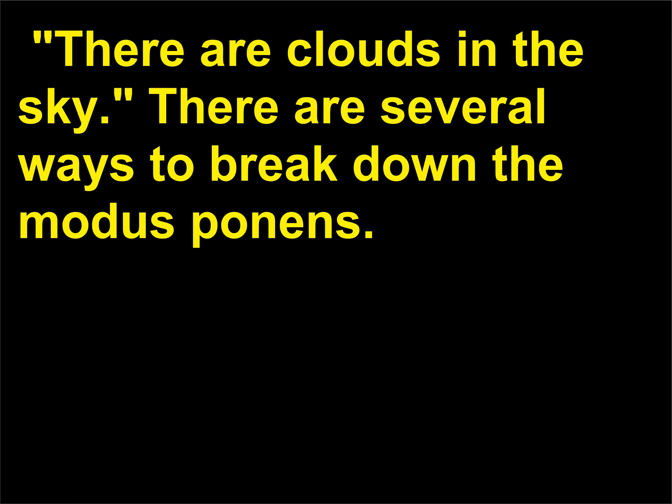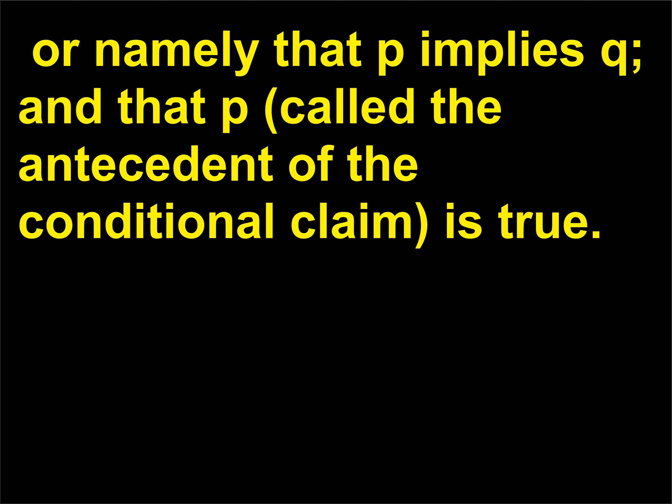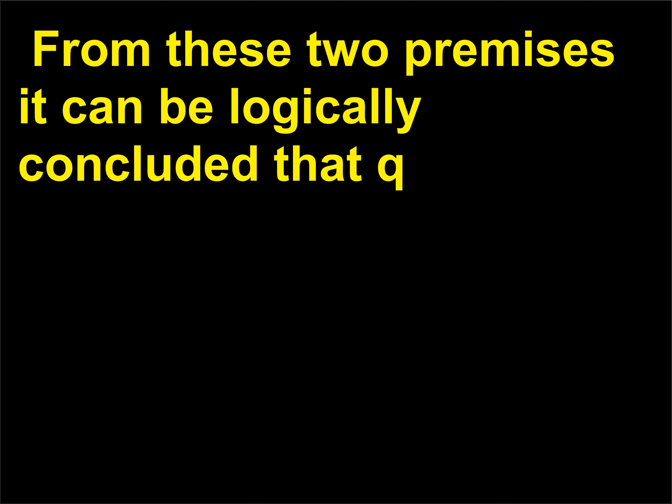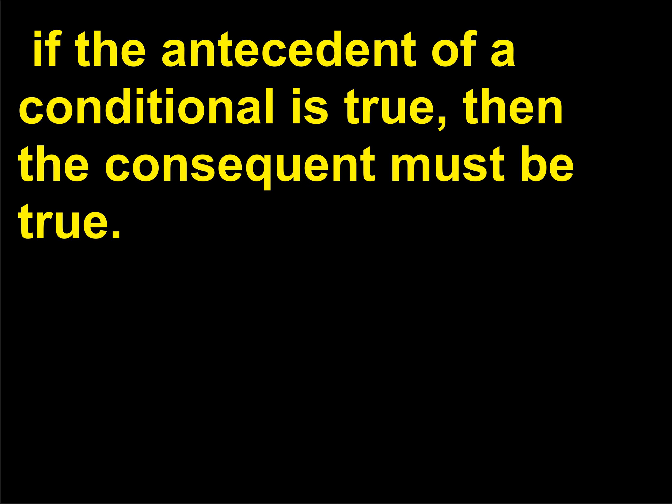There are several ways to break down the modus ponens. The argument form has two premises: the if-then, or conditional claim — namely that P implies Q — and that P, called the antecedent of the conditional claim, is true. From these two premises it can be logically concluded that Q, called the consequent of the conditional claim, must be true as well. In other words, if the antecedent of a conditional is true, then the consequent must be true.